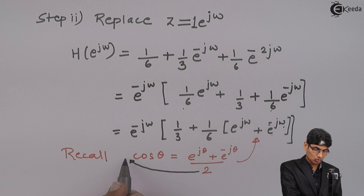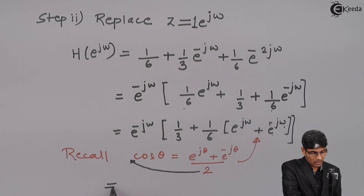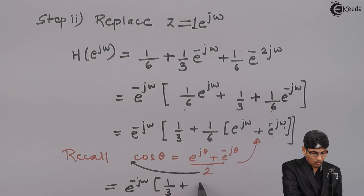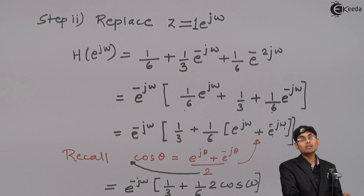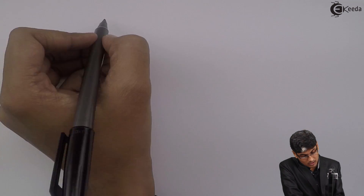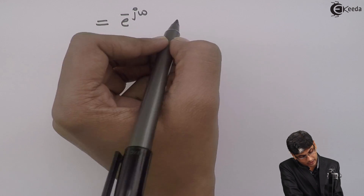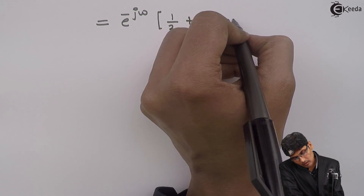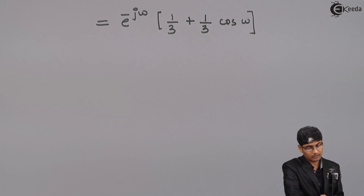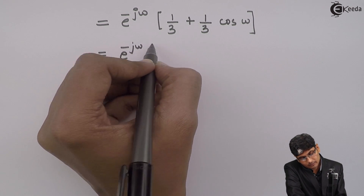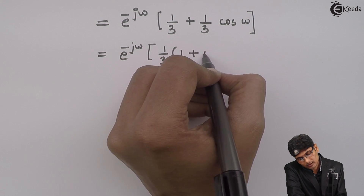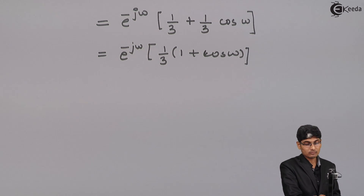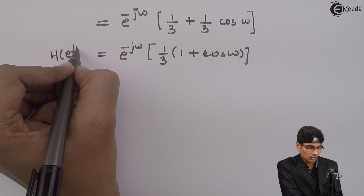Applying the cosine identity, e^(jω) + e^(-jω) = 2cos(ω), so (1/6)(e^(jω) + e^(-jω)) = (1/6)·2cos(ω) = (1/3)cos(ω). Therefore H(e^(jω)) = e^(-jω) · [1/3 + (1/3)cos(ω)]. Taking 1/3 common: H(e^(jω)) = e^(-jω) · (1/3)(1 + cos ω).